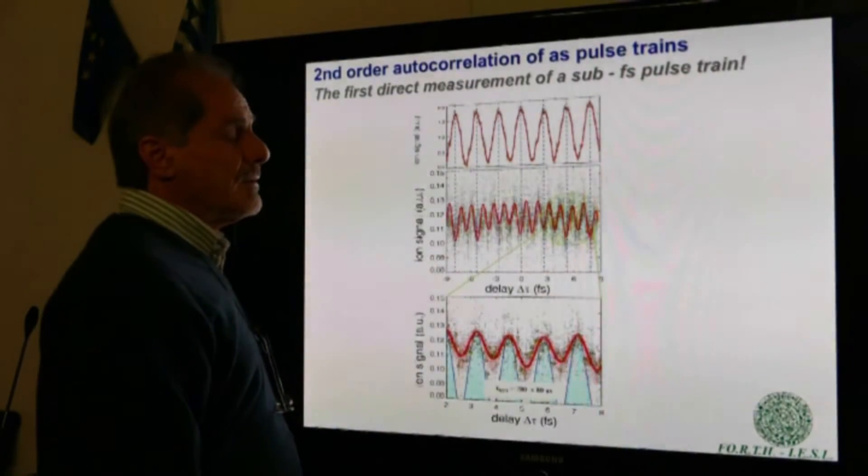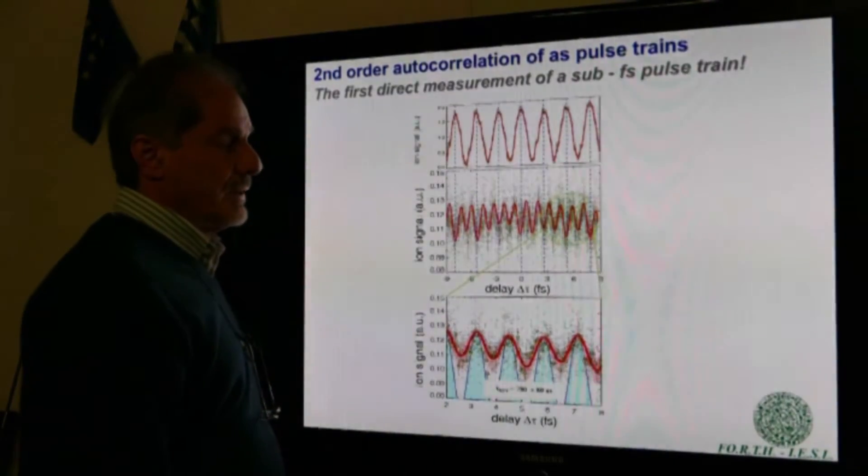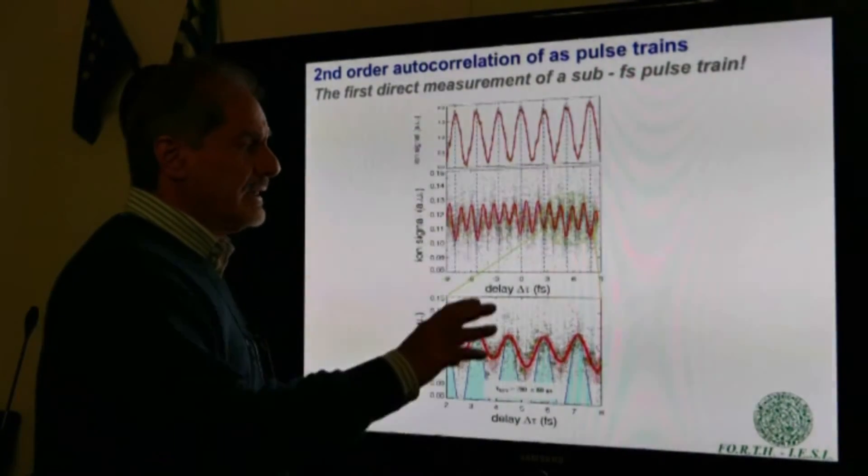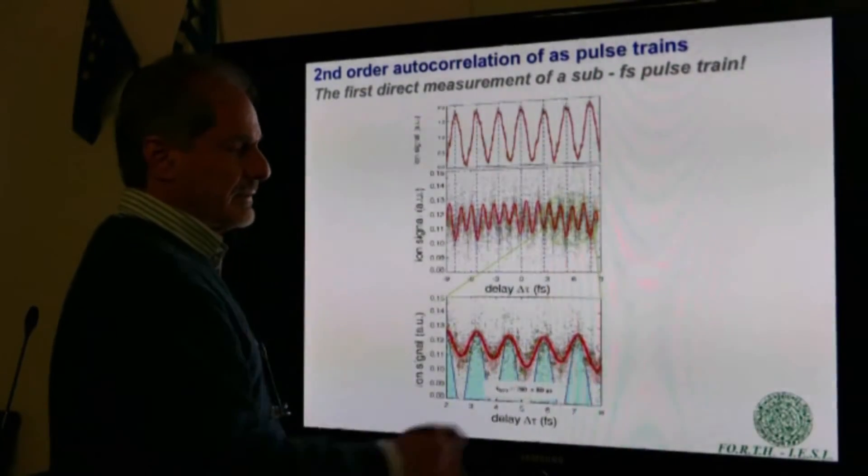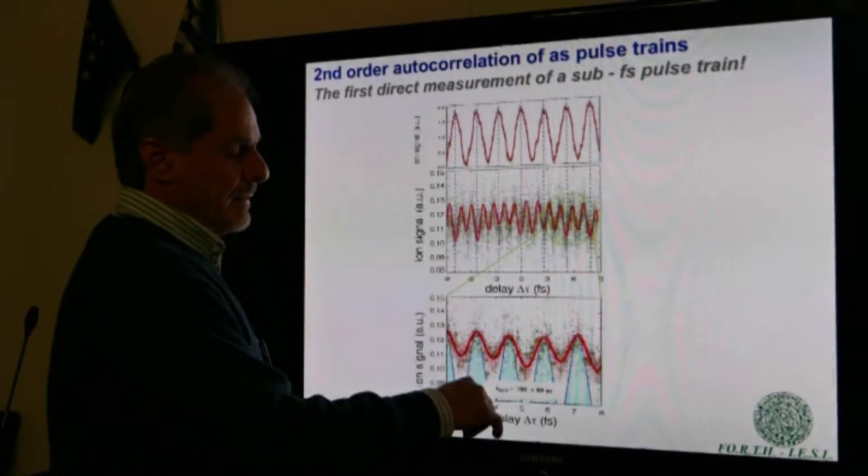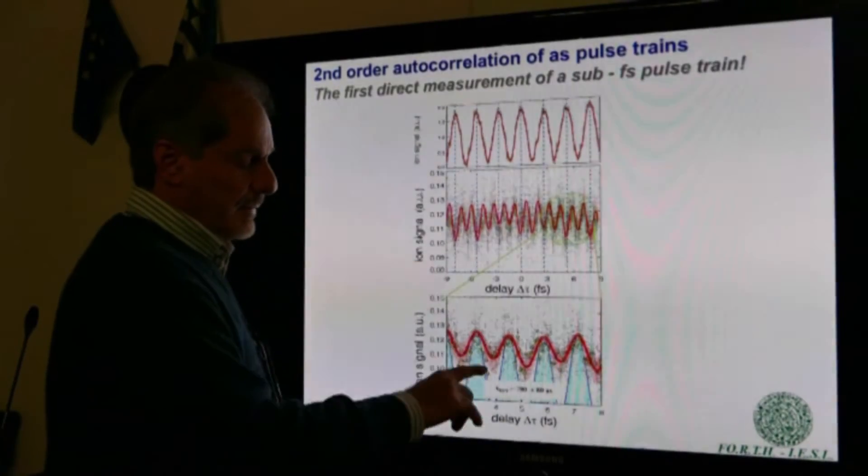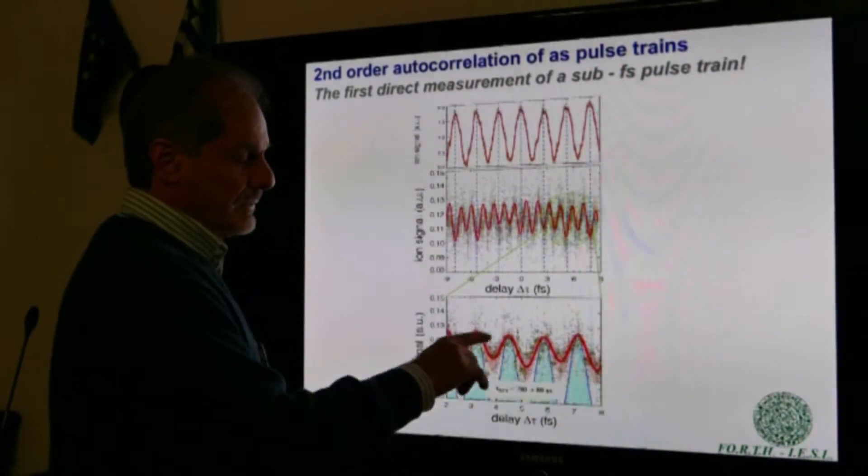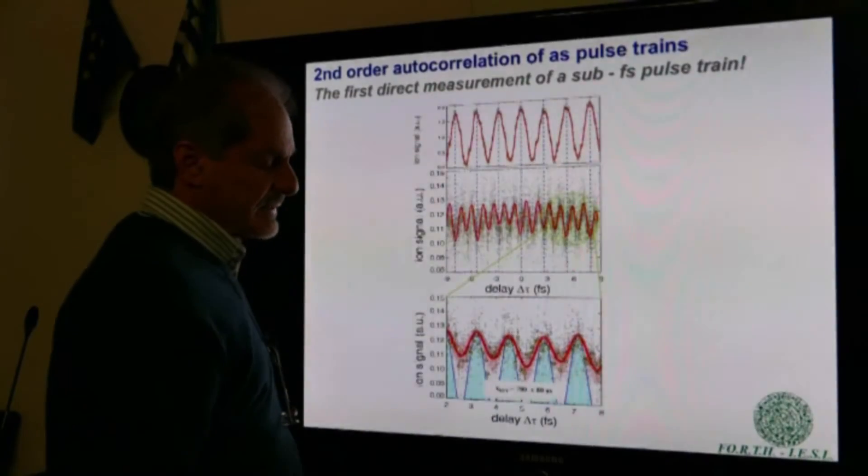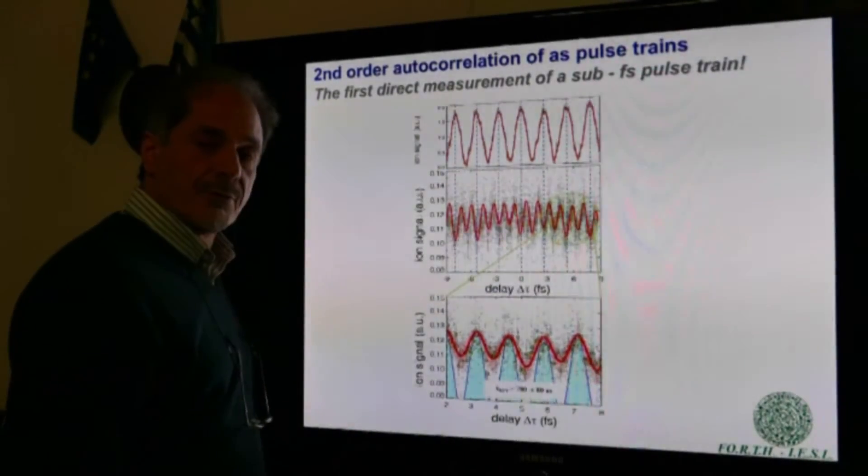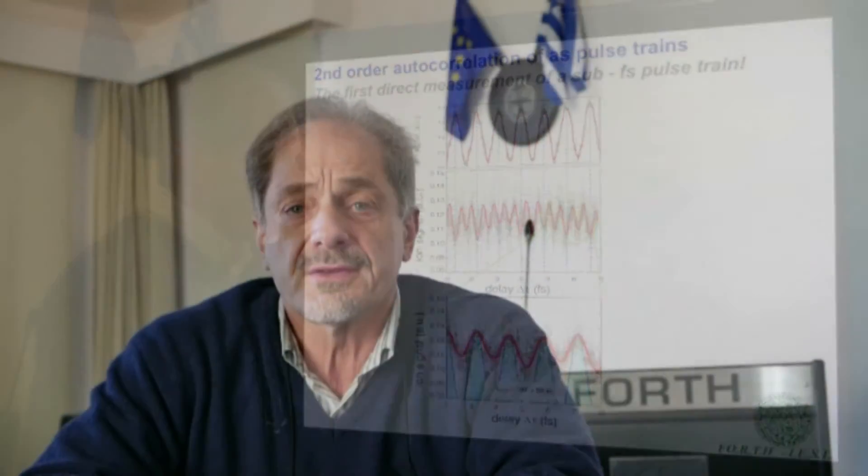The experiment was done in collaboration with the MPQ group in Garching. This is the measured trace, this is an expanded region, and by fitting Gaussian profiles into these peaks, we have extracted a pulse duration of the attosecond pulse. This is the basic version of the second-order intensity autocorrelation technique.